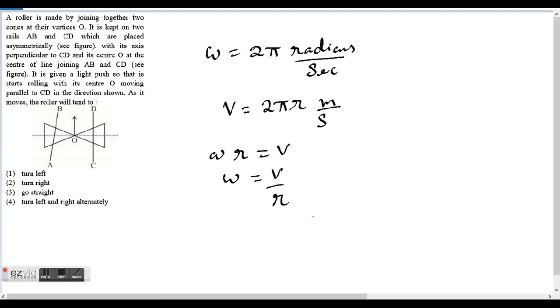Its center O is at the center of the line joining AB and CD. It is given a light push so that it starts rolling with its center O moving parallel to CD in the direction shown. As it moves, the roller will tend to: turn left, turn right, go straight, or turn left and right alternately.